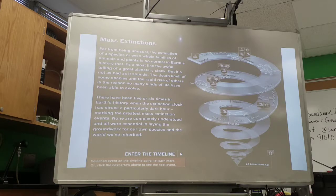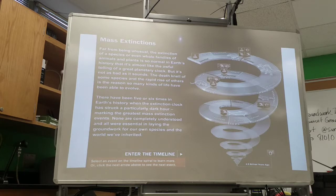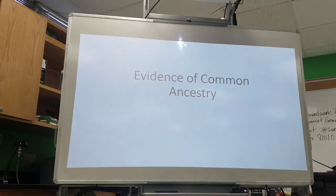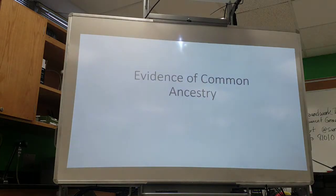Usually after a mass extinction event, there is an explosion of diversification in what's left behind. For example, the fact that we are here as mammals is due to the massive extinction that killed the dinosaurs. Because of that, all those empty niches that became available were filled by our mammalian ancestors.